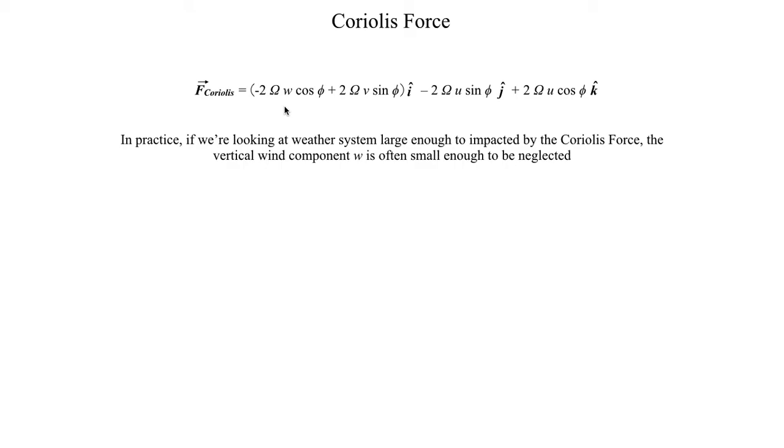Just some baseline numbers. If you consider your average mid-latitude cyclone, your winds in the horizontal direction are going to be on the order of about 10 meters per second. But your vertical wind is going to be, in a synoptic scale low, as an example, the vertical wind magnitude is going to be on the order of about a centimeter per second.